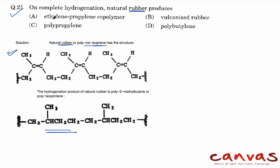It can be called poly-2-methylbutane or polyisopentane, and according to the options given here, we can also call it ethylene-propylene copolymer because this part comes from ethylene and this part comes from propylene. So the answer is first option A.